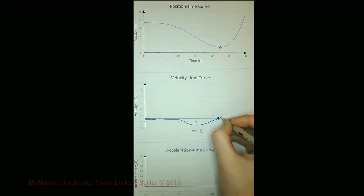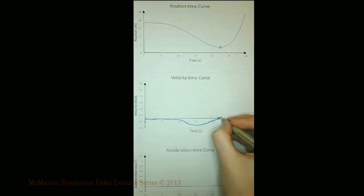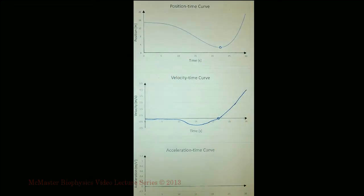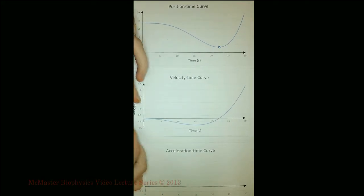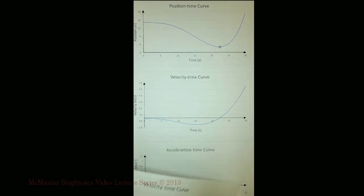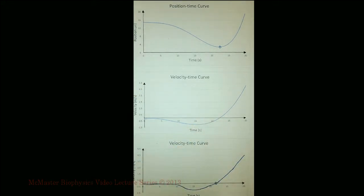After that, the slope of the position-time curve increases, so our velocity-time curve will also increase. Comparing this sketch to the actual velocity-time curve, the most important features are the same, such as the intercepts and the approximate shape.